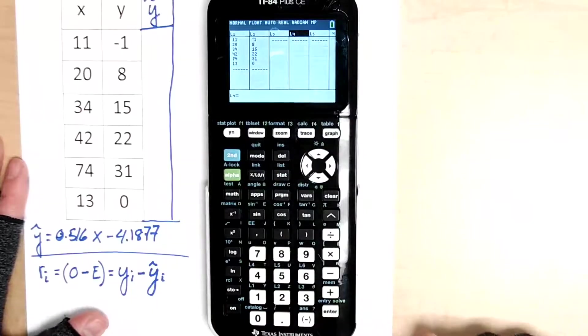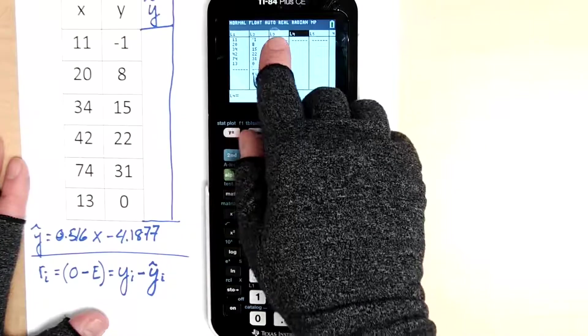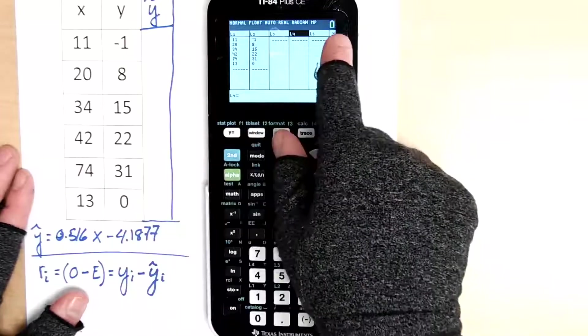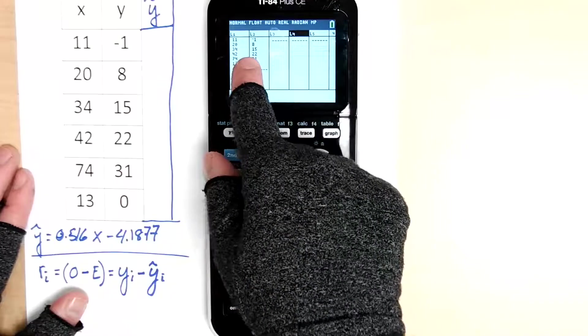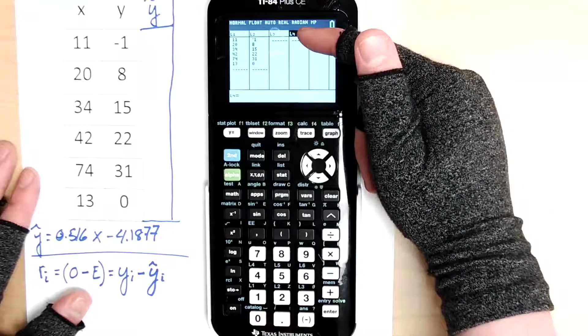And your calculator will actually do it straight up for you. You don't have to go through this process. If you wanted to, you could go up to L3 and you could tell it to calculate your y hats, and then you could make L4 be L2 minus L3. But instead, I'm going to go straight to it.